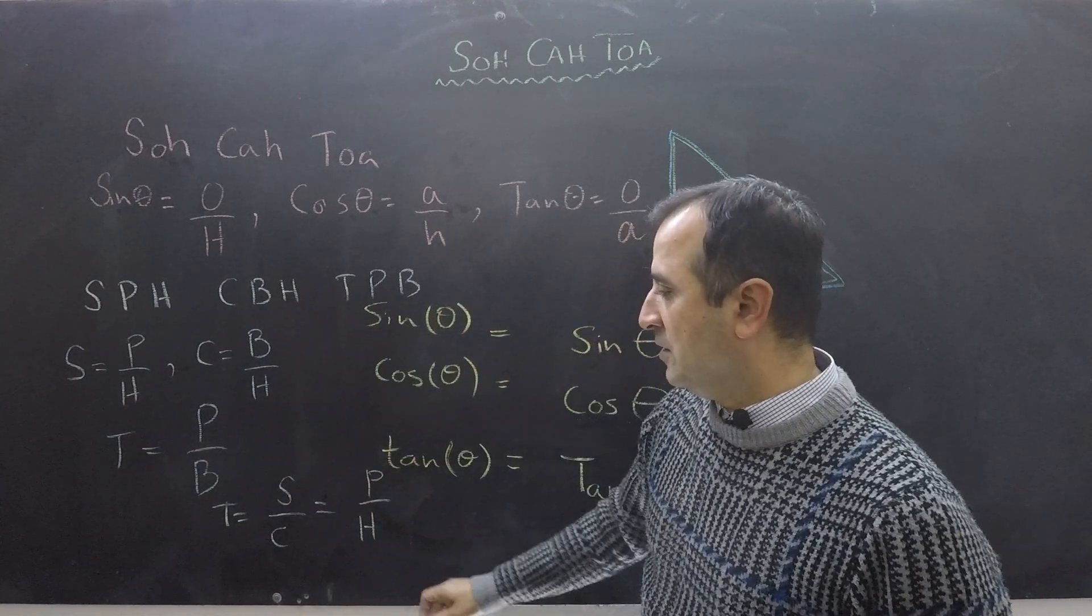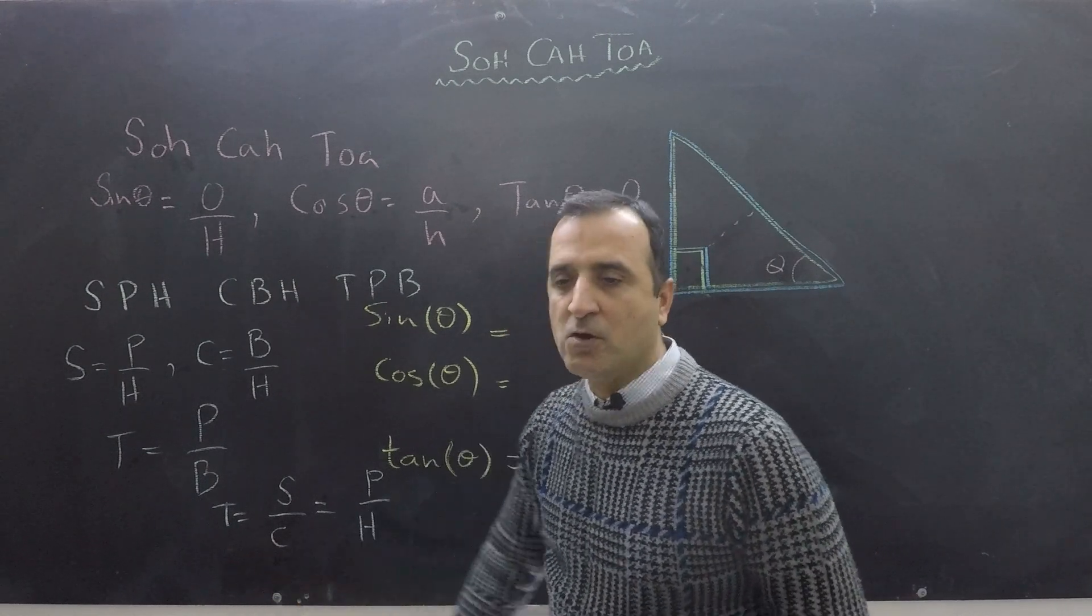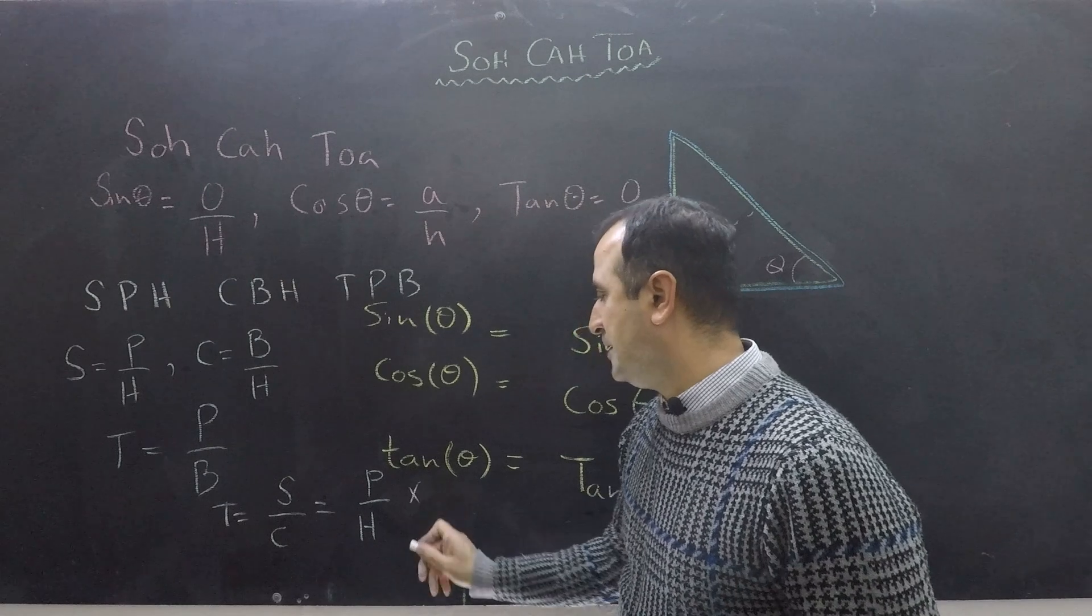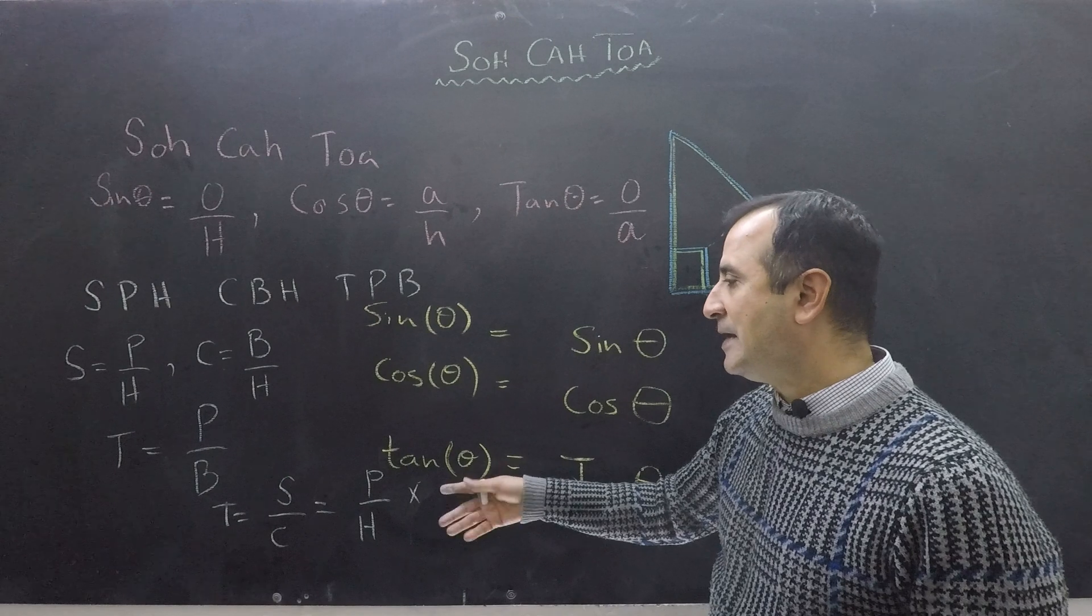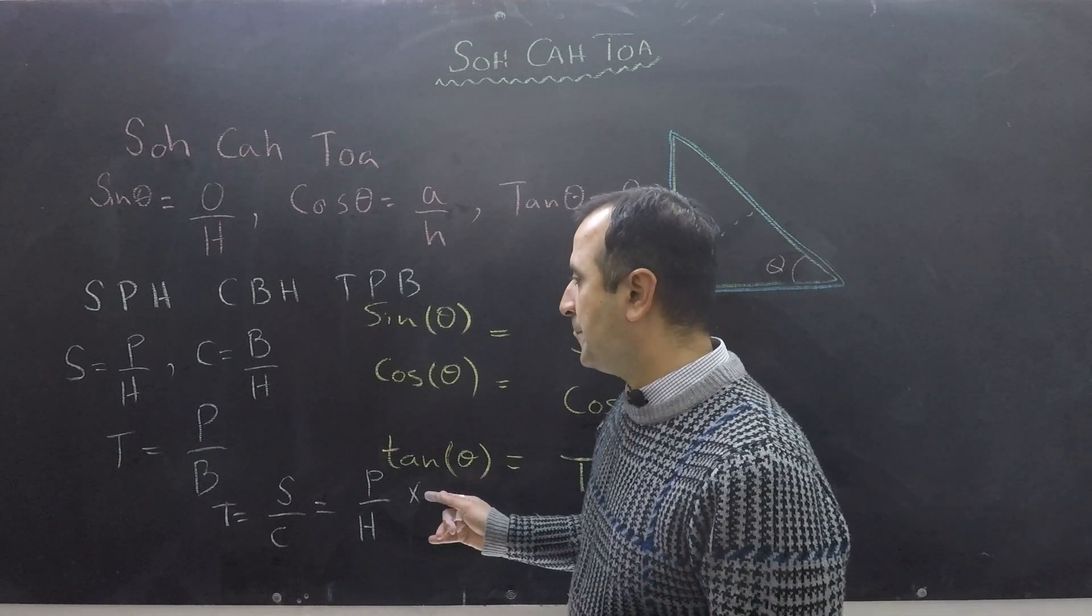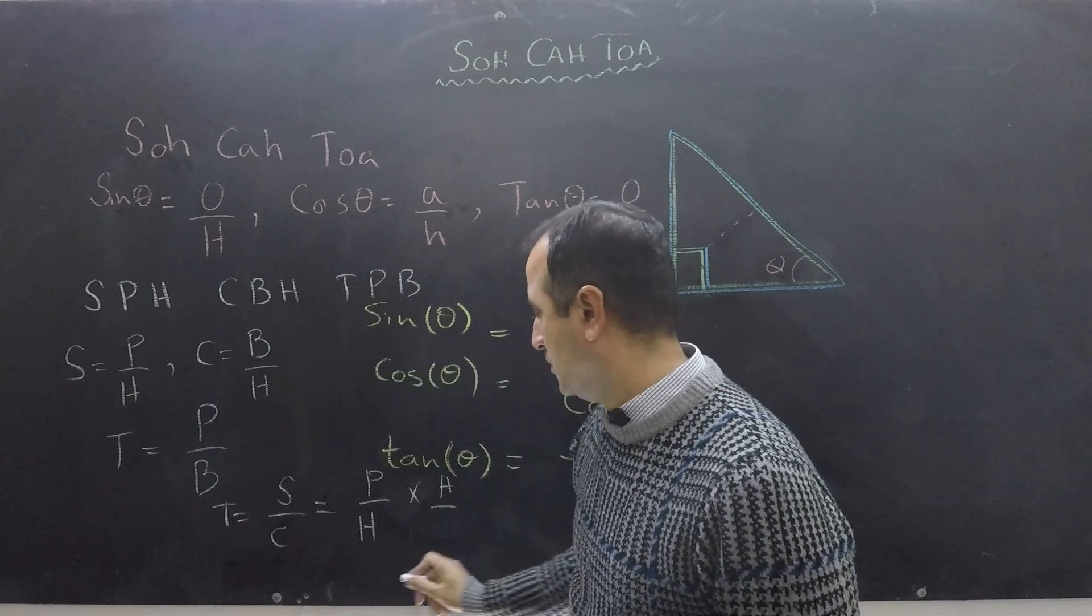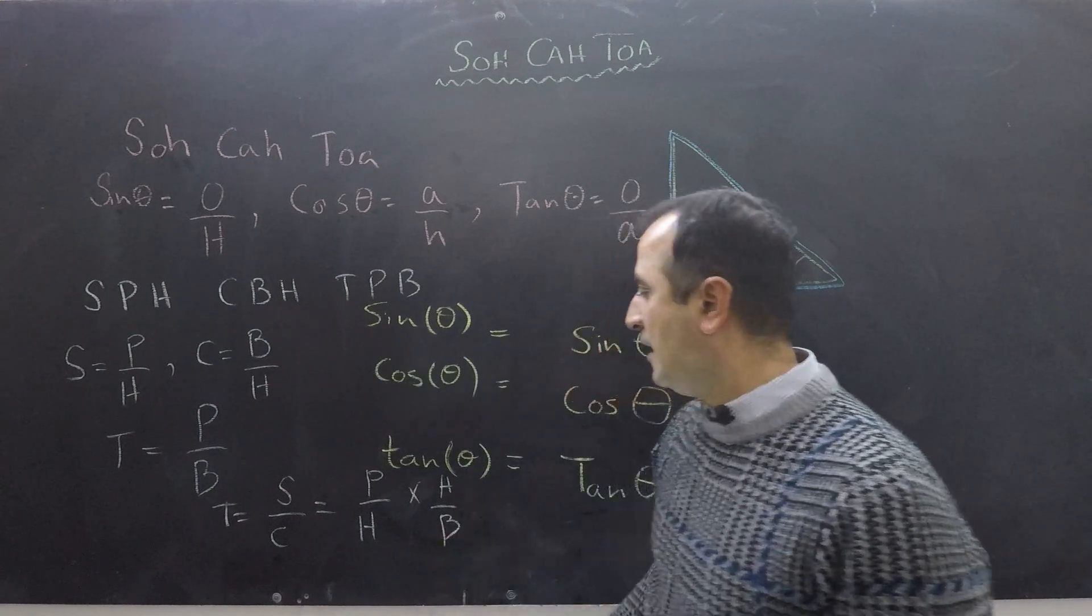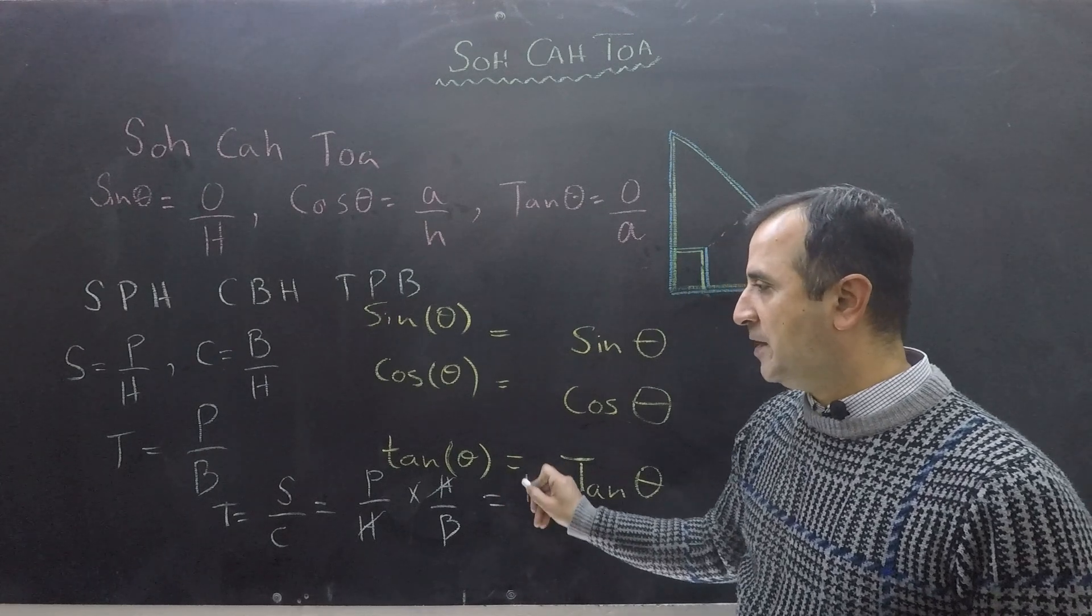And because cos is going to be in the denominator, I'm going to write it in the denominator by flipping, by taking reciprocal. So it's going to be hypotenuse over base. Hypotenuse will cancel with hypotenuse, so tan is going to be perpendicular upon base.